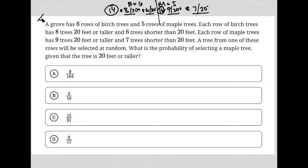A tree from one of these rows will be selected at random. What is the probability? Anytime we see the word probability, we think about a fraction — the numerator is what we want, how many ways we can get what we want, and the denominator will always be the total, what we are choosing from.